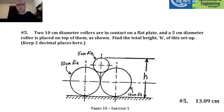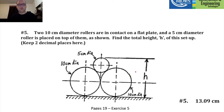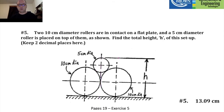On to a more interesting and challenging example. We have three rollers, and the idea is to find the overall height of this setup. Notice that there is a line of symmetry in the question, so we can cut the question in half and divide and conquer.